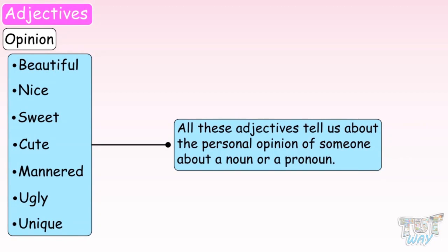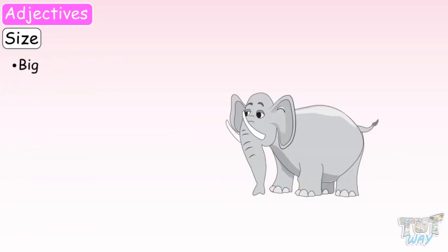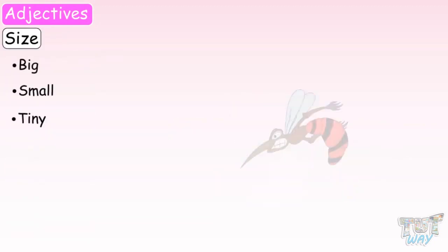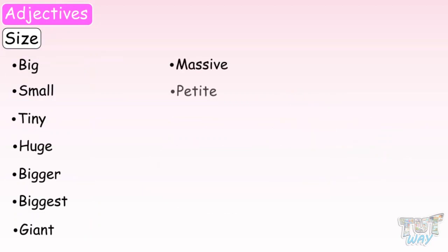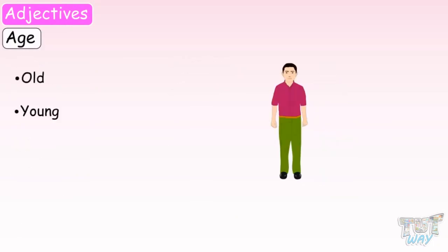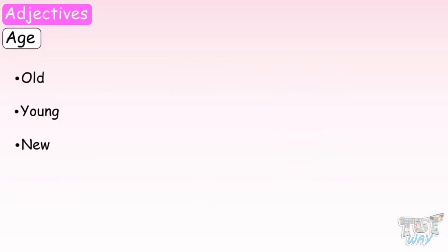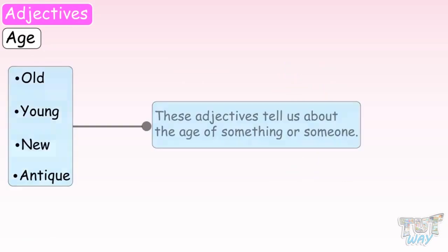Size adjectives include: big, small, tiny, huge, bigger, biggest, giant, massive, petite. All these adjectives tell us about the size of something or someone. Age adjectives include: old, young, new, antique. These adjectives tell us about the age of something or someone.